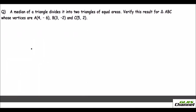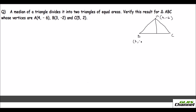The second question: a median of a triangle divides it into two triangles of equal areas — verify this for triangle ABC whose vertices are given. Imagine the triangle; drawing the median means a line from the opposite vertex to the midpoint of the opposite side. I take point A as (4, -6), B as (3, -2), and C as (5, 2).